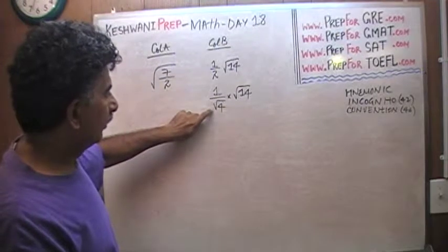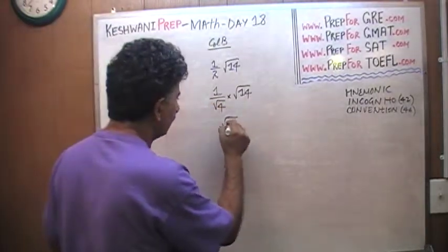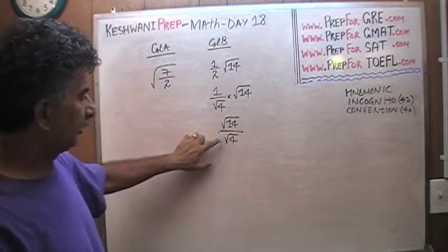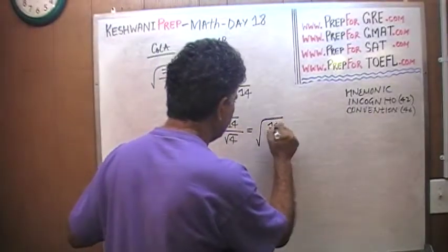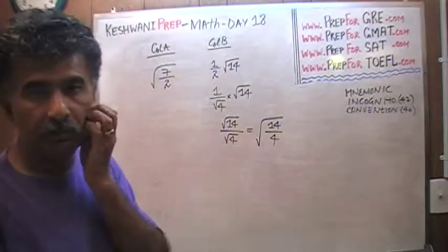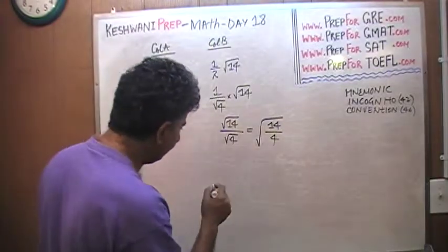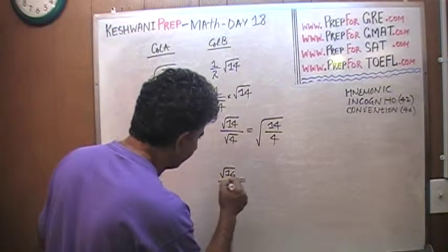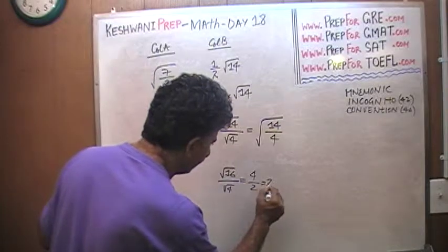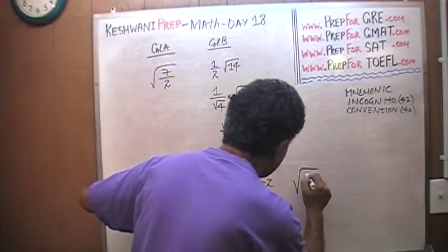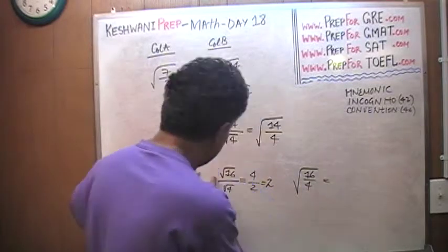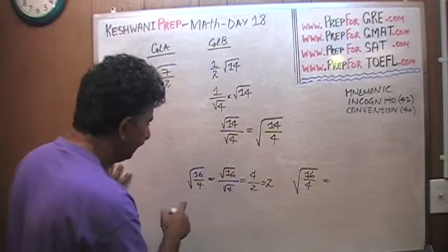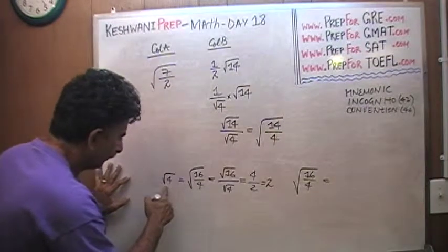Now, 1 over square root of 4 times square root of 14 — can that be written as square root of 14 over square root of 4? Of course. For example, the square root of 16 over square root of 4: square root of 16 is 4, square root of 4 is 2, the whole thing is 2. Or we could write square root of 16 over square root of 4 as square root of 16 over 4, and 16 over 4 is 4, which is the same as square root of 4, and square root of 4 is 2. Either way we get the same answer.